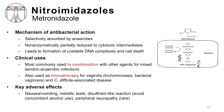Finally, we will briefly discuss the nitroimidazole class, of which there is one available member in the United States called metronidazole. Similar to TMP-SMX, this agent has both protozoal and bacterial activity, but we will focus on its antibacterial activity, which is restricted to anaerobic bacteria. Metronidazole is selectively absorbed by anaerobes and partially reduced inside the anaerobic bacterial cell to toxic metabolites, as depicted in the accompanying figure. These metabolites directly damage DNA, leading to cell death. Metronidazole is most commonly used in combination with other agents for mixed aerobic-anaerobic infections, such as intra-abdominal infections or polymicrobial brain abscesses. It is also used as monotherapy for certain types of vaginitis, trichomoniasis, bacterial vaginosis, and C. difficile-associated disease.